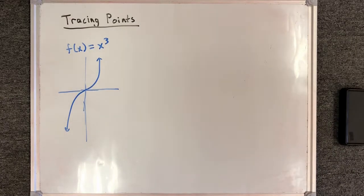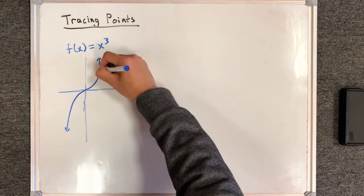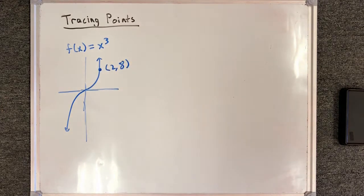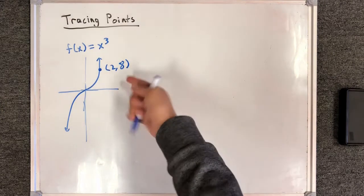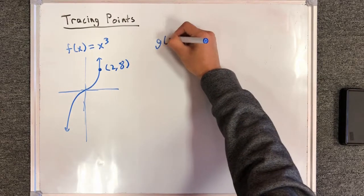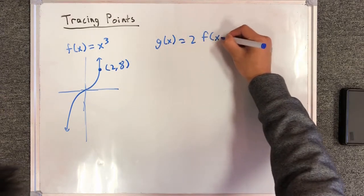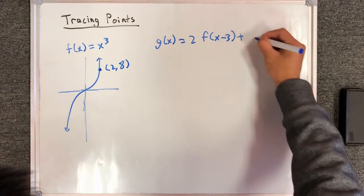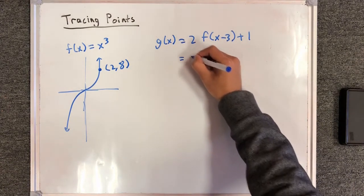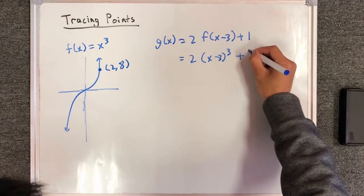Next let's look at a slightly more complicated example. Let's say we were given x cubed this time, and we were interested in the point 2 comma 8 — and this can be any point, we don't always have to have x equal to 2. Now let's say that we had g of x equals 2 f of x minus 3 plus 1. The resulting equation will be 2 times x minus 3 to the third power plus 1.